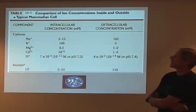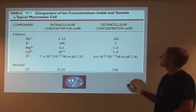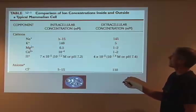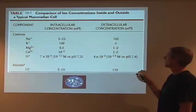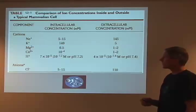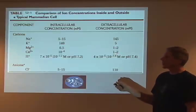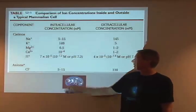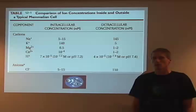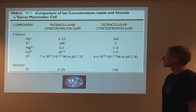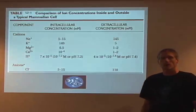The concentrations of ions in a typical mammalian cell are shown here. What's important to remember is that sodium is very high outside and low inside, and potassium is the reverse — potassium is high inside and low outside. In addition, calcium is high outside, about one to two millimolar, relative to a very small amount inside. Cells take great pains to pump calcium out or into the ER, as we'll discuss later when we talk about signal transduction. Chloride ions, which are negatively charged, are low inside and high outside of cells.